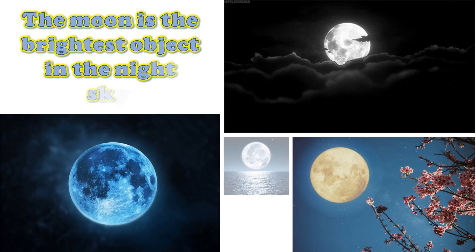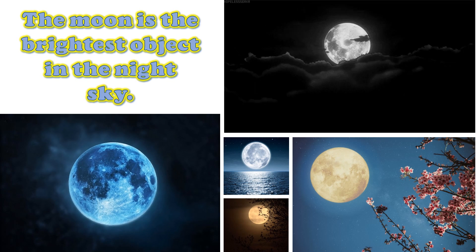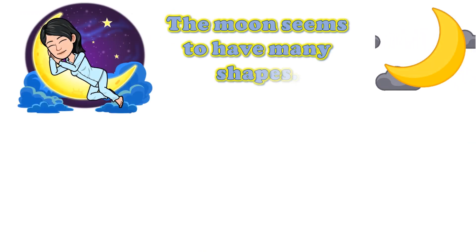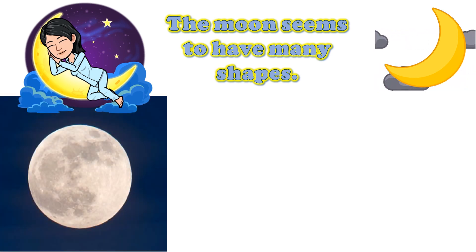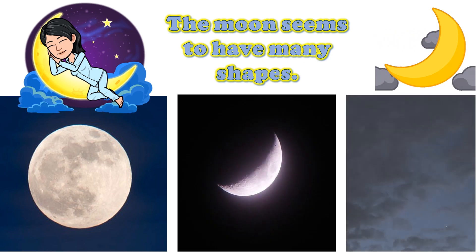The moon is the brightest object in the night sky. It does not produce its own light, but reflects the light from the sun. The moon seems to have many shapes — sometimes it is round, sometimes it is a crescent, and sometimes it is nowhere to be found.